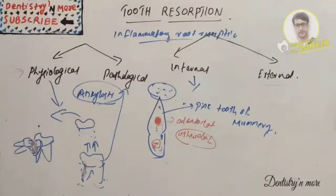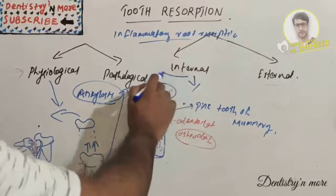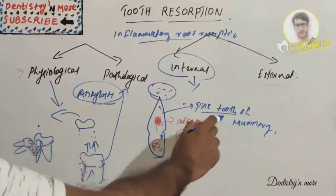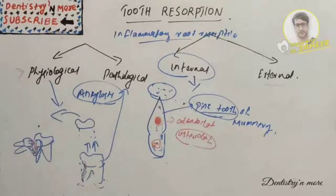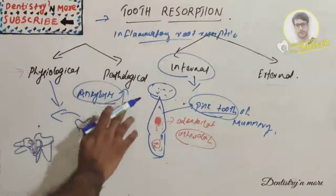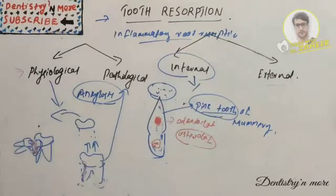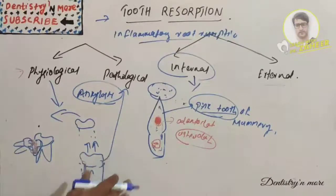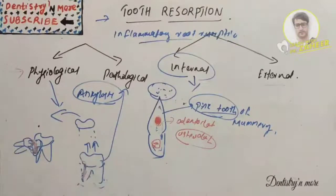In summary, identification of the stimulant factor is key to rendering proper treatment by removing the etiological factor. Internal resorption and the pink tooth are commonly asked short essay topics. A full answer should cover physiological and pathological resorption, internal and external types, their features, diagnosis, and treatment.